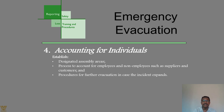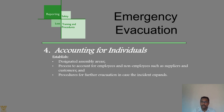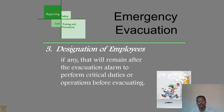Accounting for individuals: establish a designated assembly area that everybody is aware of — in cases of emergency, at least know where to go. Establish processes to account for employees and non-employees such as suppliers and customers. Procedures for further evacuation if the magnitude of the disaster is increasing — being in the assembly area alone may not help, and you need a proper expanded evacuation plan.